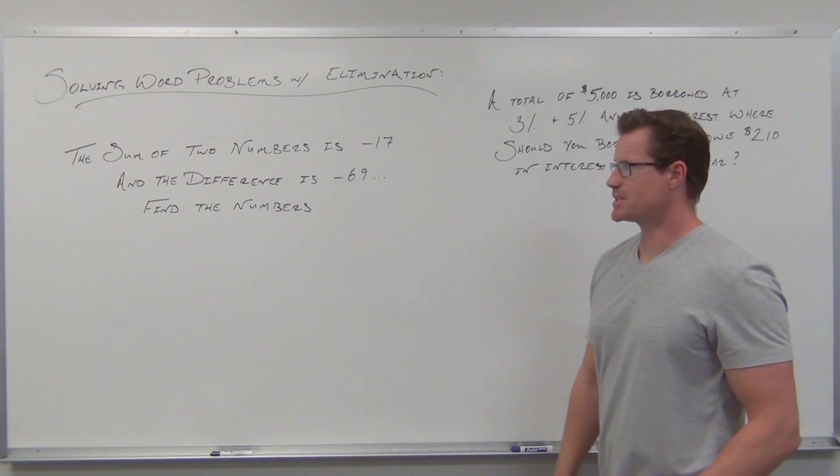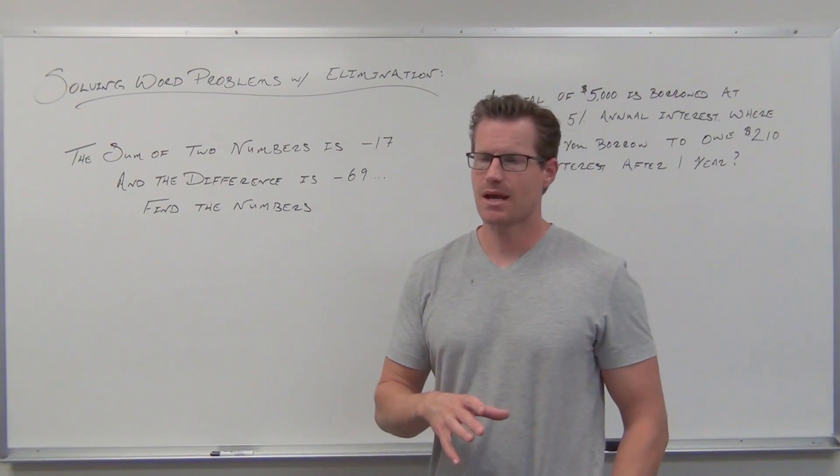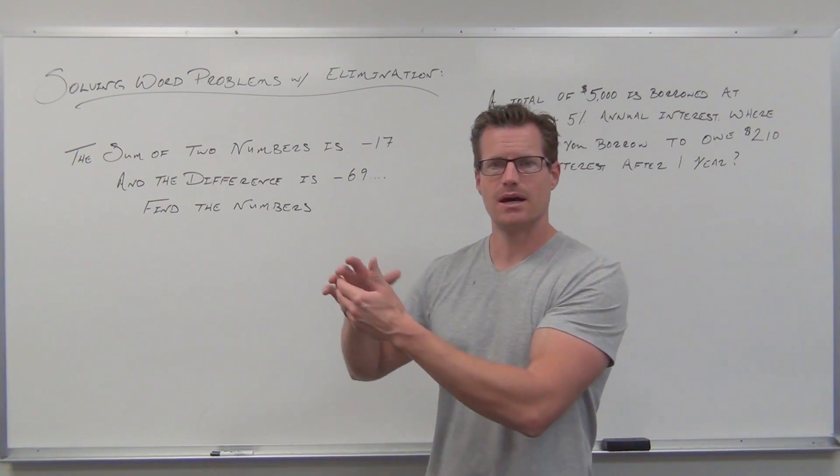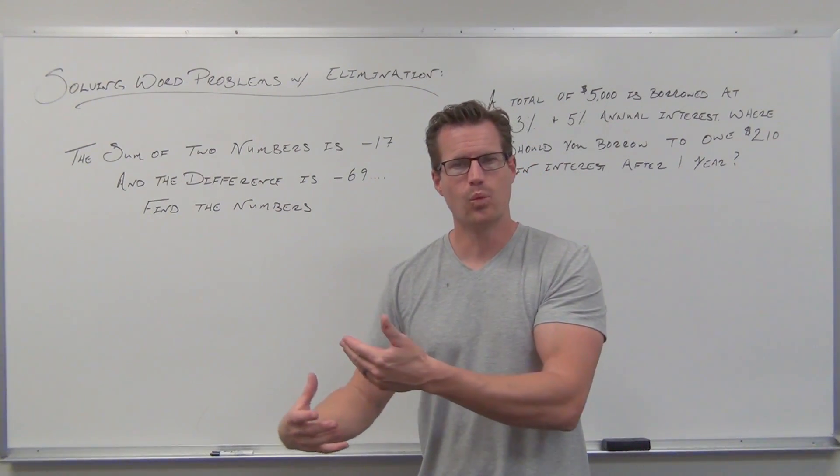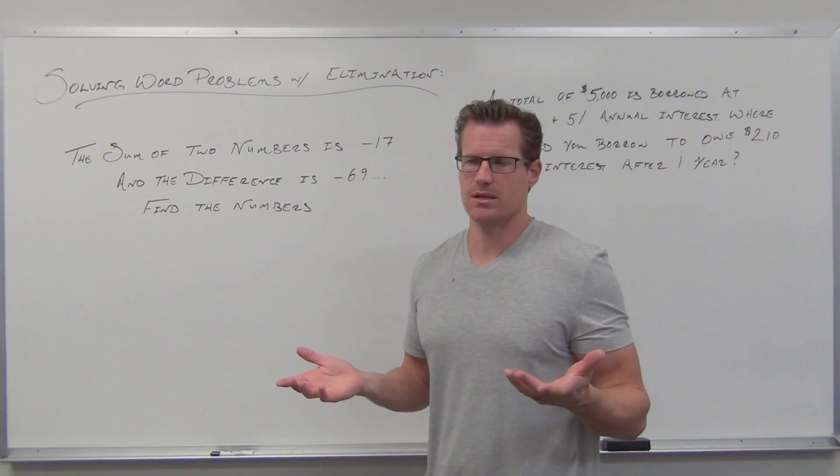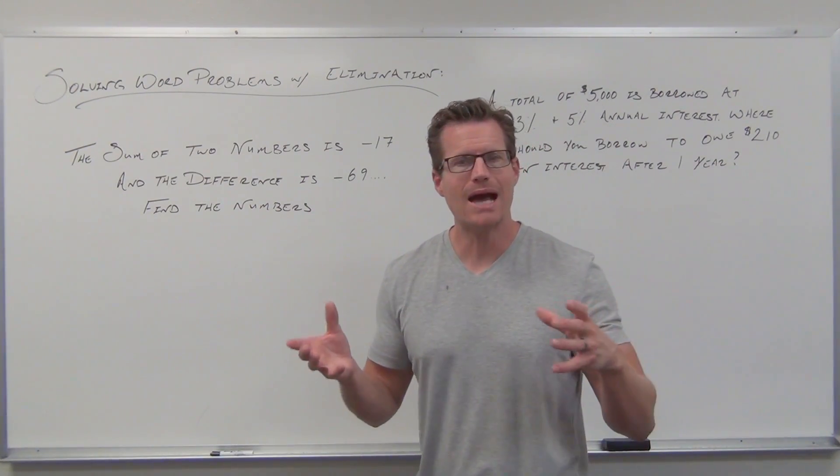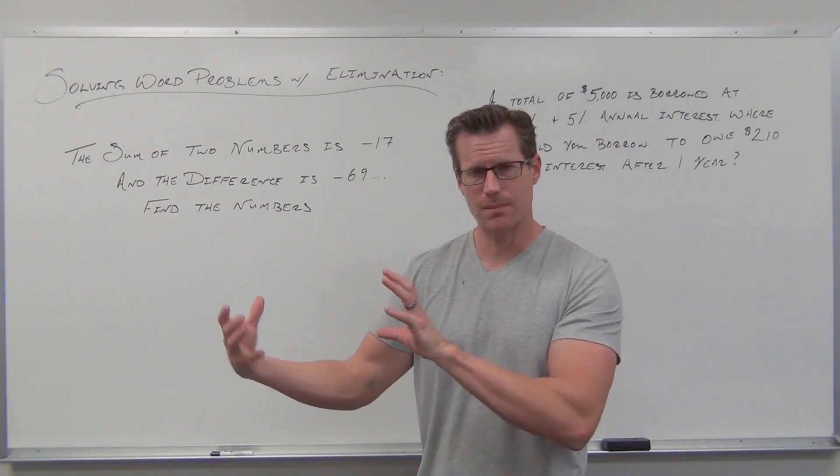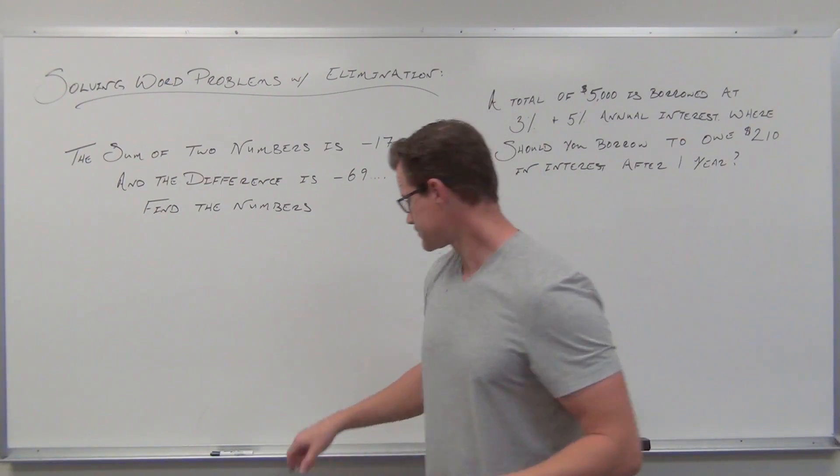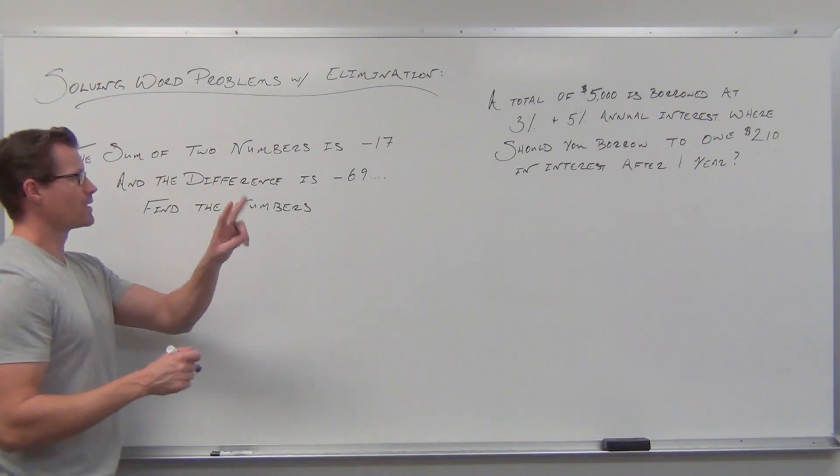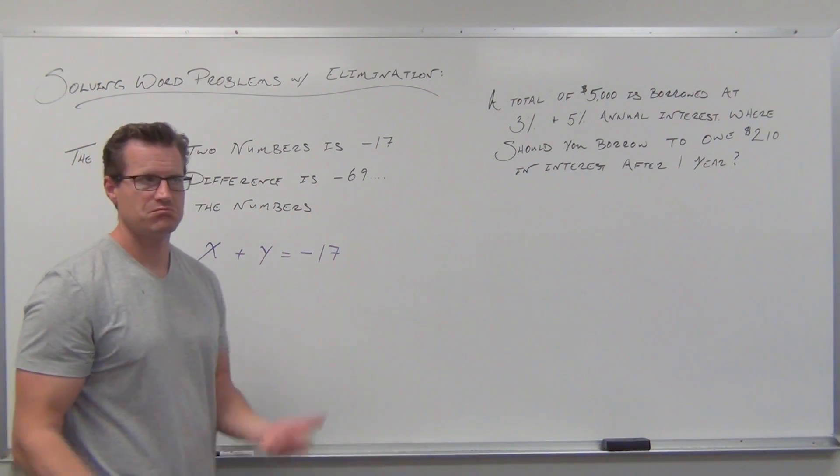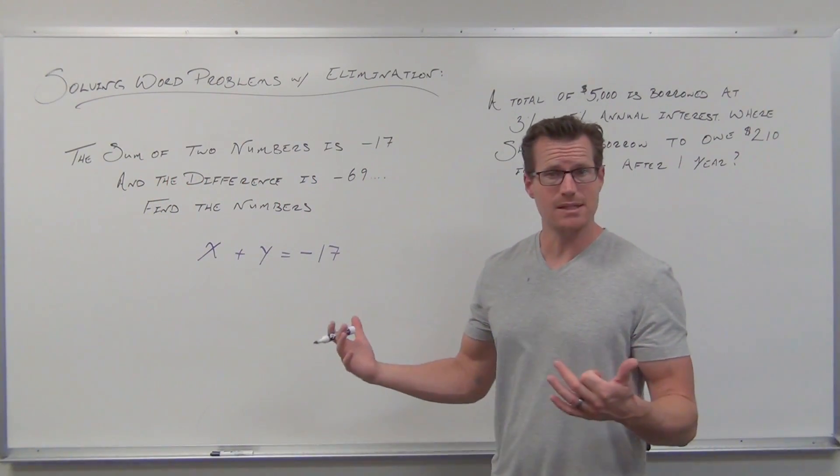Let's look at a basic example. The sum of two numbers is negative 17. In the past, I would have to call those two numbers x and then find another representation with x. But when I'm allowed two equations, I'm also allowed two different variables. Let's call one x and one y. The sum is x + y = -17.